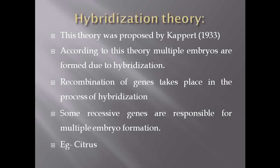The second cause of polyembryony is the hybridization theory, proposed by scientist Keppart in 1933. In the process of hybridization, two genetic constitutions are mixed to form a new combination. According to this theory, multiple embryos are formed due to hybridization because recombination of genes is one cause of formation of multiple embryos. Some plants have recessive genes responsible for forming multiple embryos, for example, Citrus.